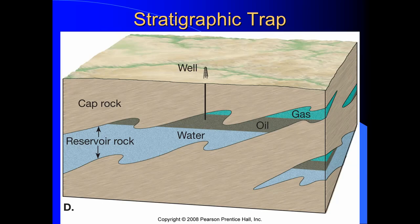We don't have this problem with coal because once coal forms, it's a solid — it's not going anywhere. The reason we need these traps is because oil, a liquid, and natural gas, a gas, are mobile in the subsurface.